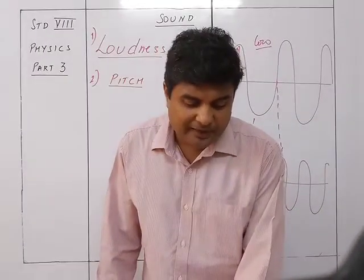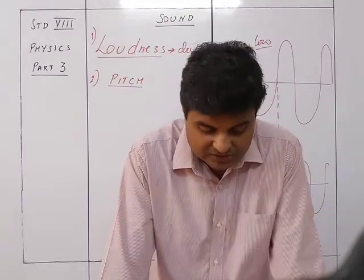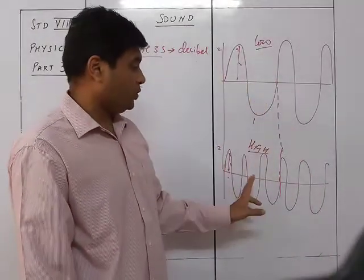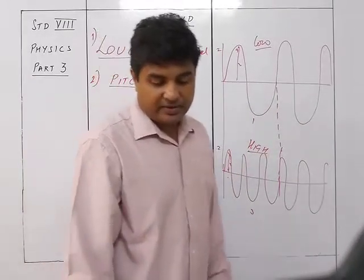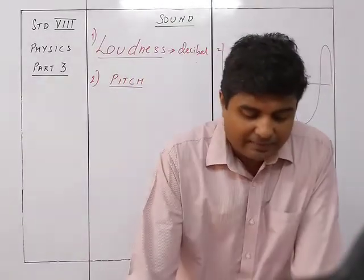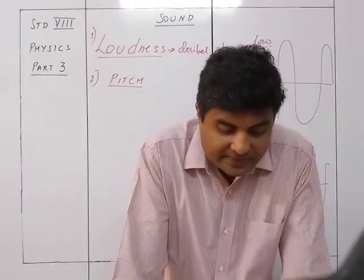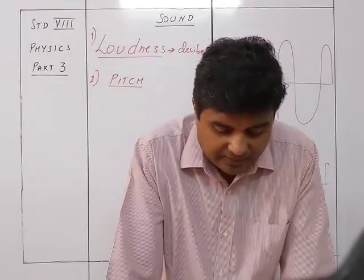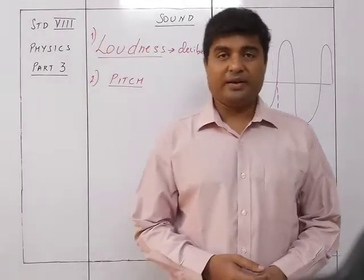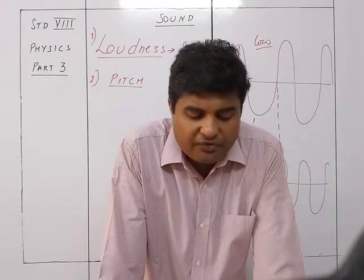In the displacement-time graph, if the number of waves in the same time interval increases, it means the time period has decreased and the frequency has increased. Similarly, in the displacement-distance graph, if the number of waves over the same distance increases, the wavelength has decreased and the frequency has increased. So if the time period or the distance between waves decreases, the frequency increases.